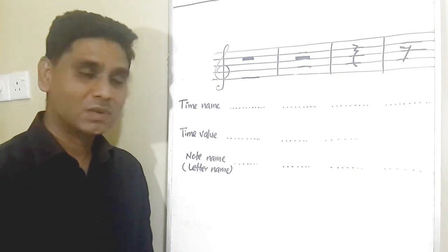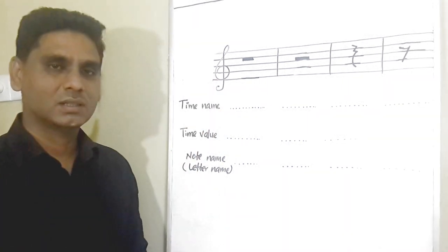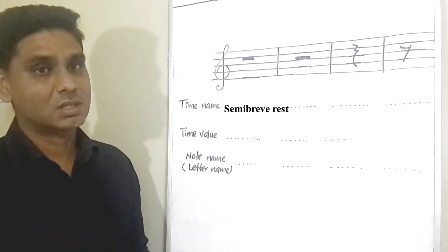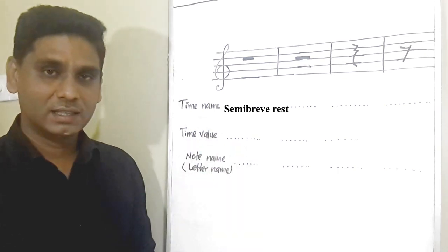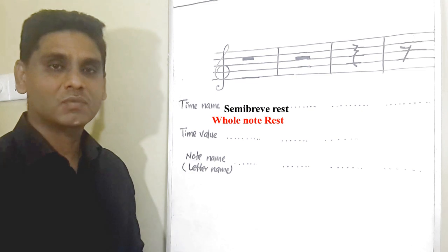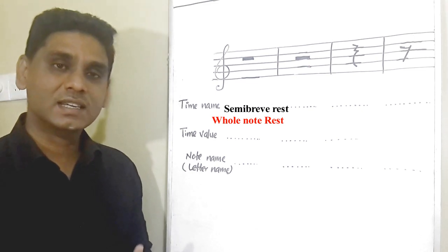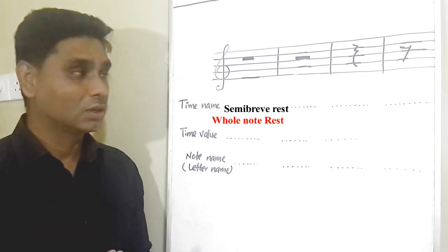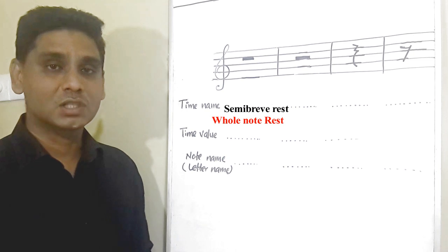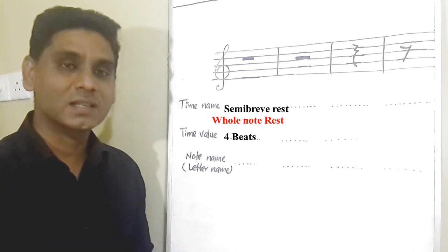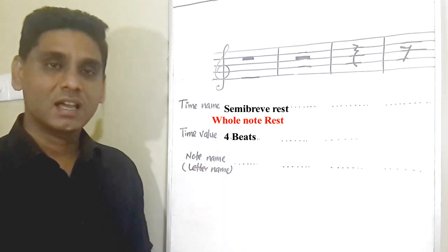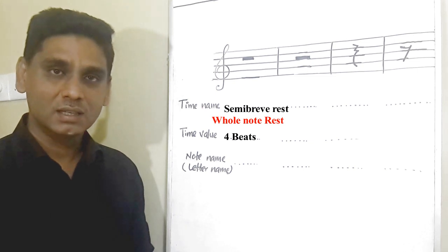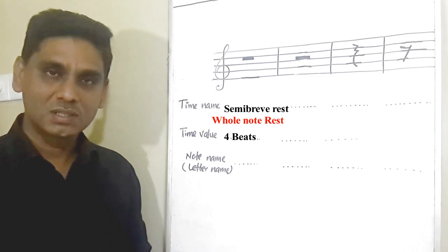Now we are going to learn what are the time names and time values of music rests. Let's go to the first symbol. The time name of this symbol is the semibreve rest, which is related to the semibreve note. We can also say whole note rest. The semibreve rest has the same beat value as the semibreve note — remember, the semibreve note has 4 beats. So the semibreve rest also has 4 beats. The difference is that the music note has sound, but the rest doesn't have sound. Music notes are played, but music rests are not played — they are counted.